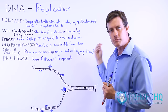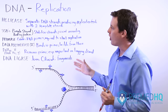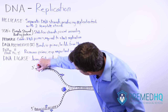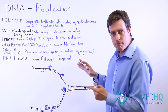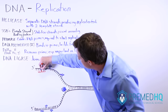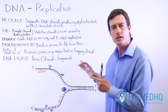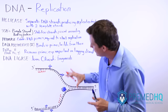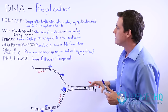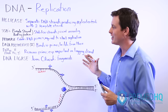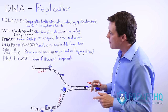DNA polymerase doesn't just start from nowhere — it needs a primer. A primer is a short segment of RNA, perhaps five to fifteen base pairs long, that allows the polymerase to come and bind. The primase shows up to produce these short RNA primer segments, and these primer segments allow the polymerase to start the replication process. So primase creates these RNA primers, which are required to start replication, and then DNA polymerase will come along.